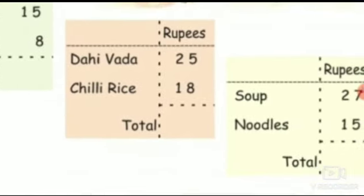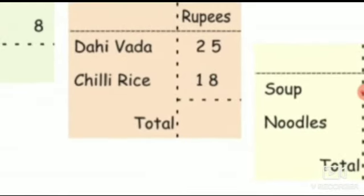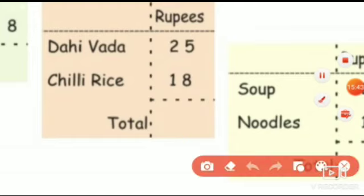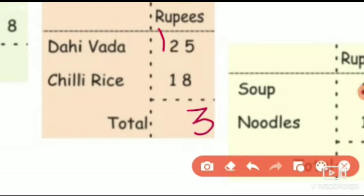Next bill is dahivada and chili rice. Dahivada is rupees 25 and chili rice is rupees 18. So let's total it: 5 plus 8 is 13, so we write 3 and 1 carry over. Now 2 plus 1 is 3 and 3 plus 1 is 4. So what is the total of dahivada and chili rice? The total is 43 rupees.